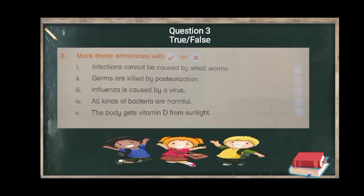Now question number 3, true or false. One: infections cannot be caused by small worms — False, they can. Two: germs are killed by pasteurization — True. Three: influenza is caused by a virus — True. Four: all kinds of bacteria are harmful — False, some bacteria are useful. Five: the body gets vitamin D from sunlight — True. So the answers are: false, true, true, false, true.